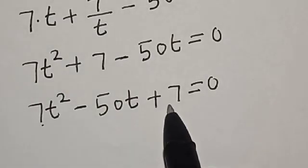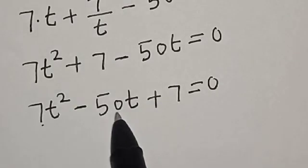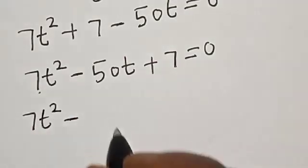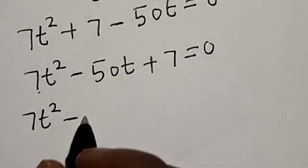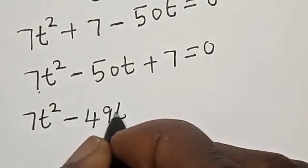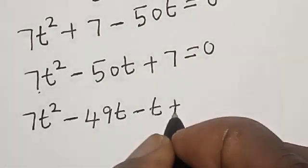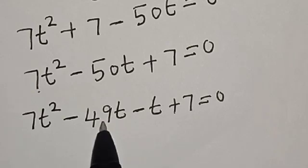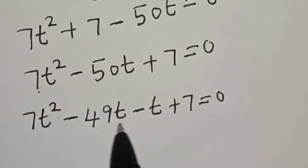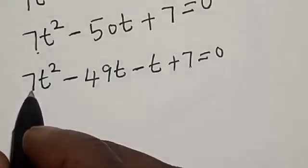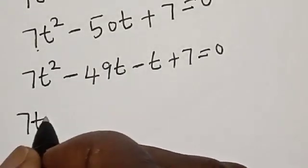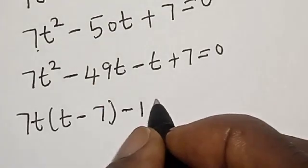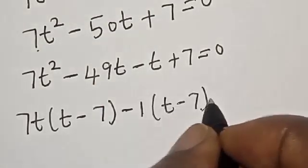Then we look for two numbers so that the product will give 49 and the sum will give minus 50. So we have 7t squared minus 49t minus t plus 7 is equal to 0, because minus 49 times minus 1 gives plus 49, and minus 49 minus 1 gives minus 50.